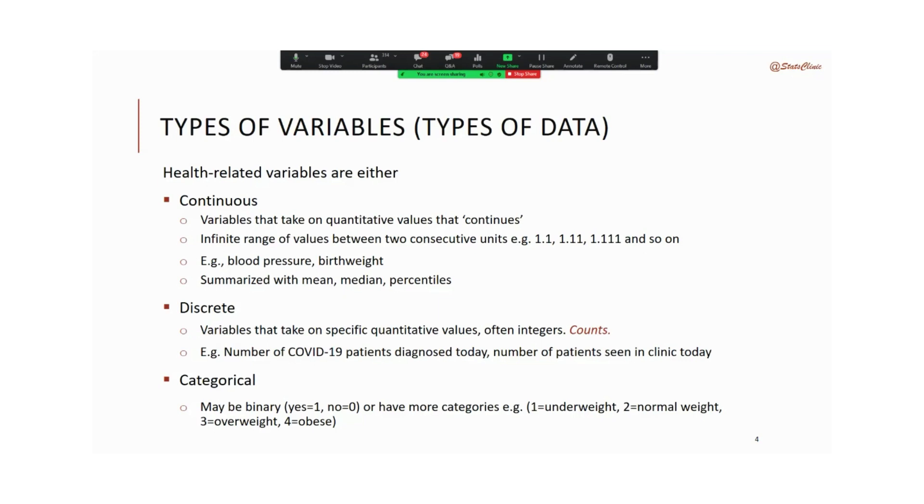Birth weight would be another example - maybe one child is 2500 grams, another is 3000 grams, another is 3050. Understanding what the variables are is very key to knowing which statistical procedures to use. This is very important. It's important to differentiate continuous variables from discrete variables.